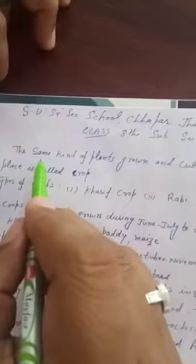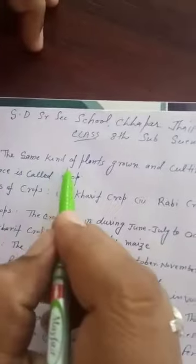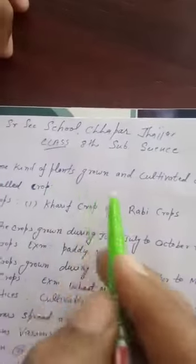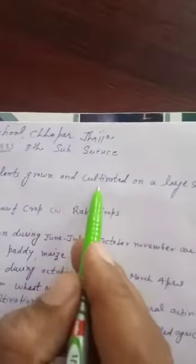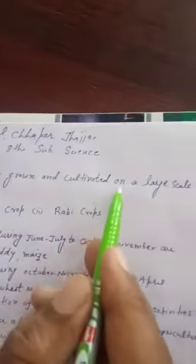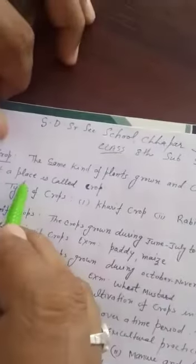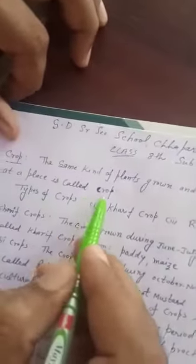The same kind of plants grown and cultivated on a large scale at a place is called a crop.